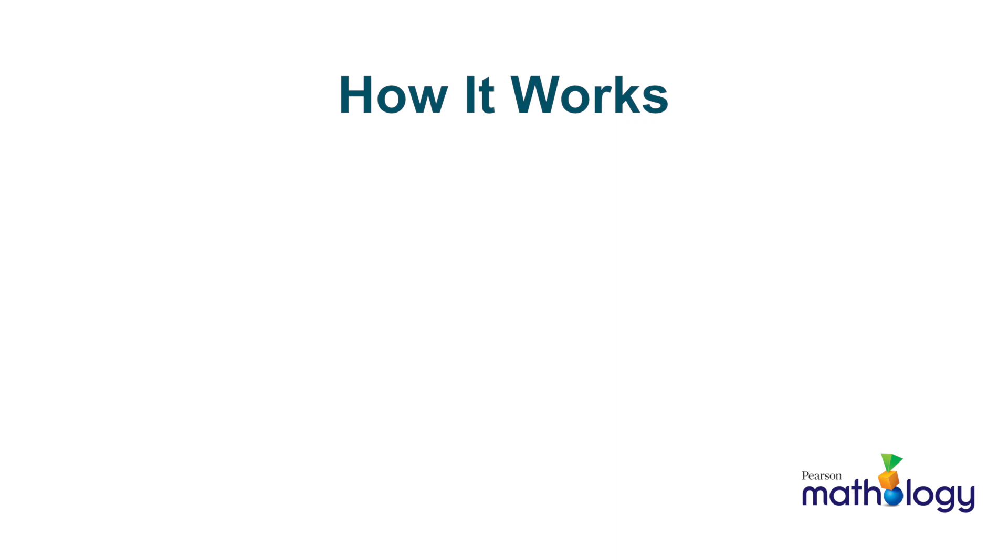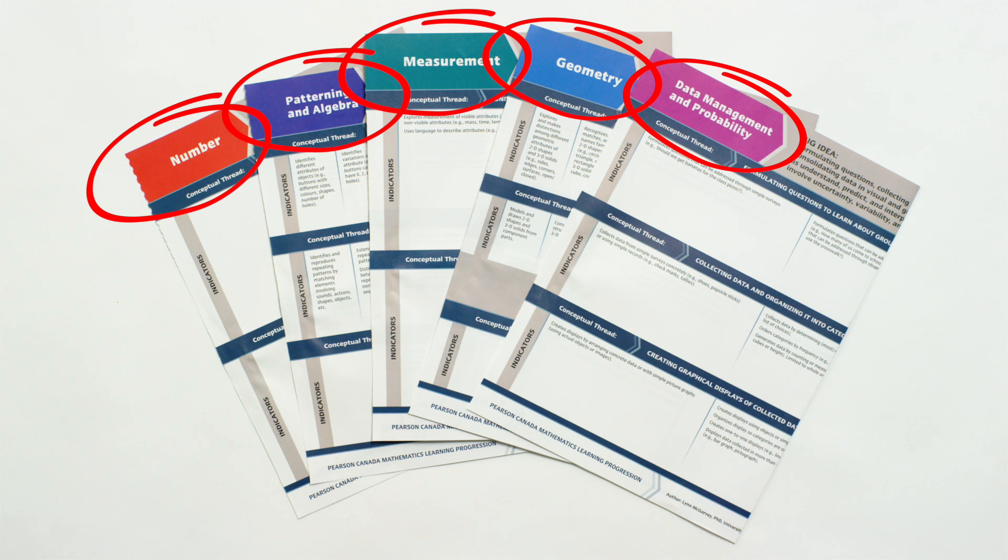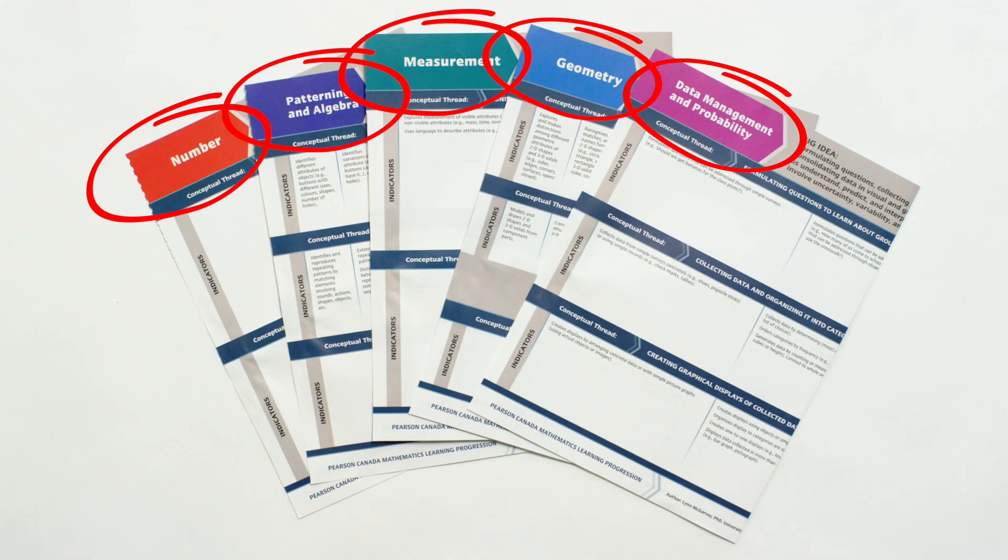Let's take a look at how the learning progression is structured. It's built on this framework: Strands, big ideas, conceptual threads, and indicators. We used five common strands of mathematics, so it will be easy for you to see your curriculum in the progression.